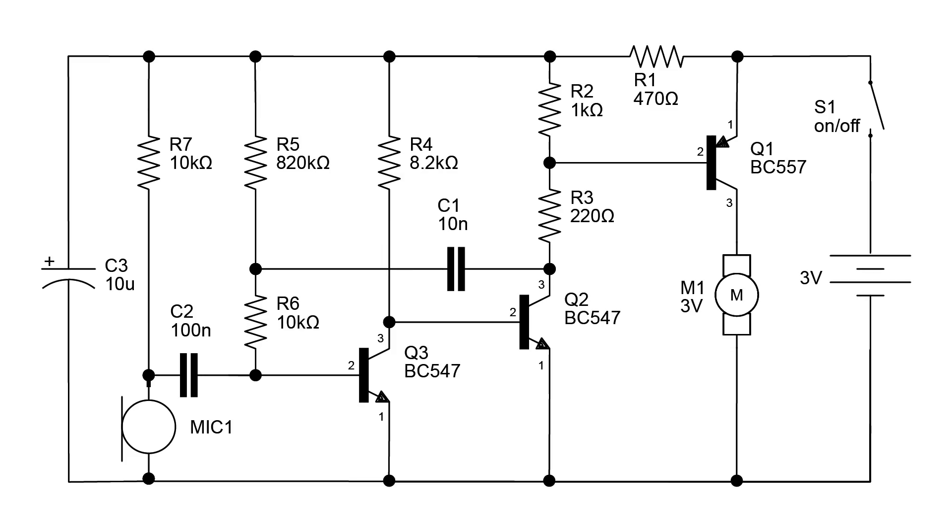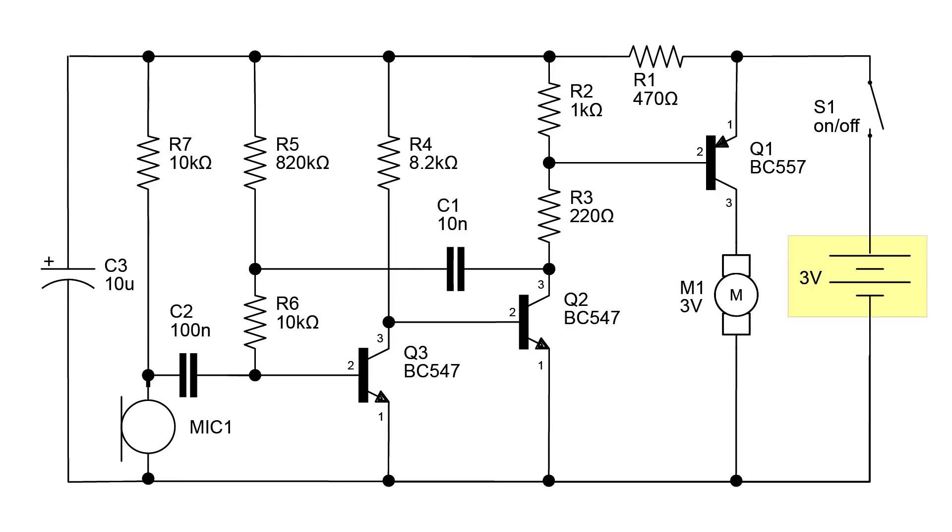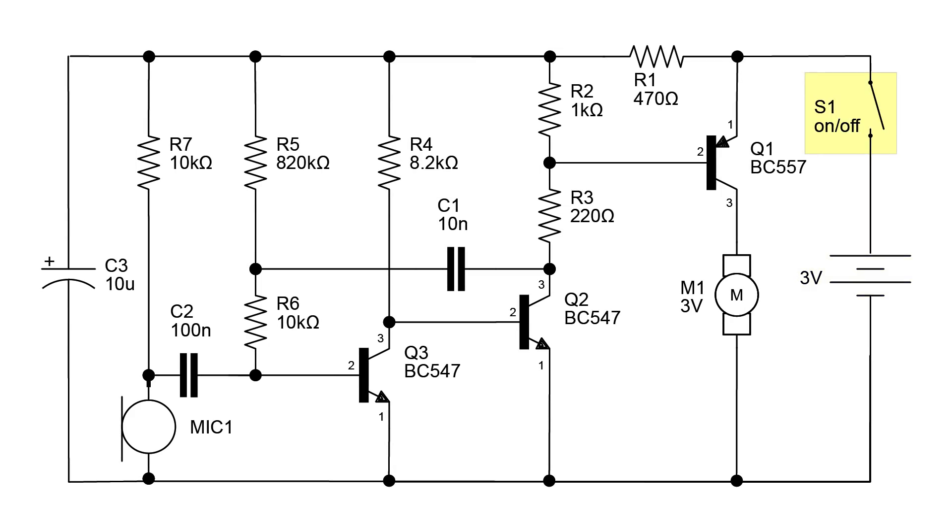Here's the circuit diagram for our project. I pulled this out of an ebook of 100 transistor projects. On the right we have our DC power supply that tells us the circuit runs on 3 volts. Positive power is connected to a switch which turns the entire circuit on and off.